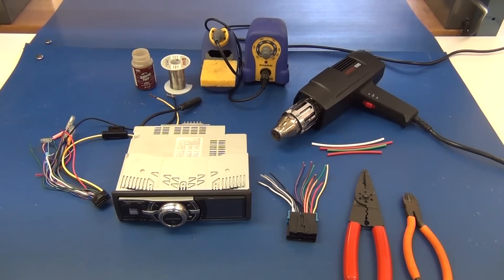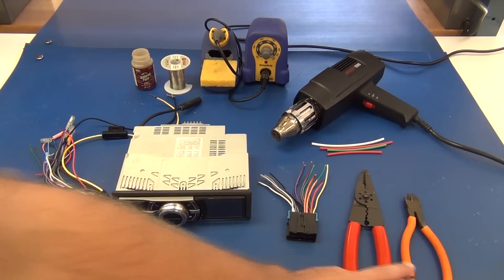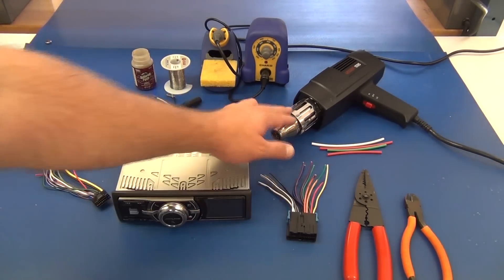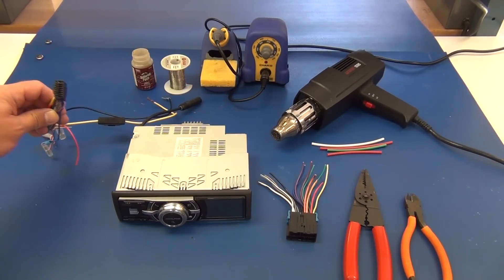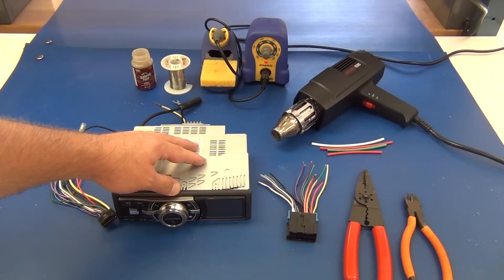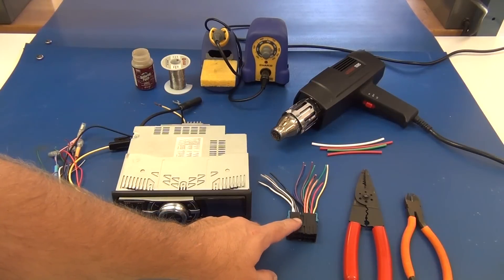The tools required today to perform this job and correctly wire up our car stereo will be diagonal cutters, wire strippers, a heat gun, soldering iron, solder, solder paste, the wiring harness that came with the car stereo that will be installed, and our adapter harness.